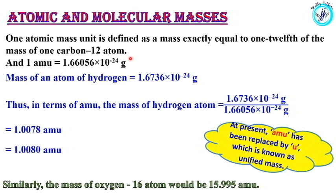1 atomic mass unit is equal to 1.66056 × 10⁻²⁴ grams. 1 hydrogen atom is equal to 1.6736 × 10⁻²⁴ grams. So we call it the atomic mass unit.